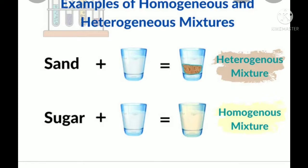Now we understood what a solution is. Two kinds of mixtures are there — homo and hetero. In homogeneous, the particles are uniformly distributed everywhere, and such kind of homogeneous mixture is called a solution. Day to day, most of the things we are using are in the form of solution. The best example is seawater, which is a solution — a mixture of many dissolved salts.